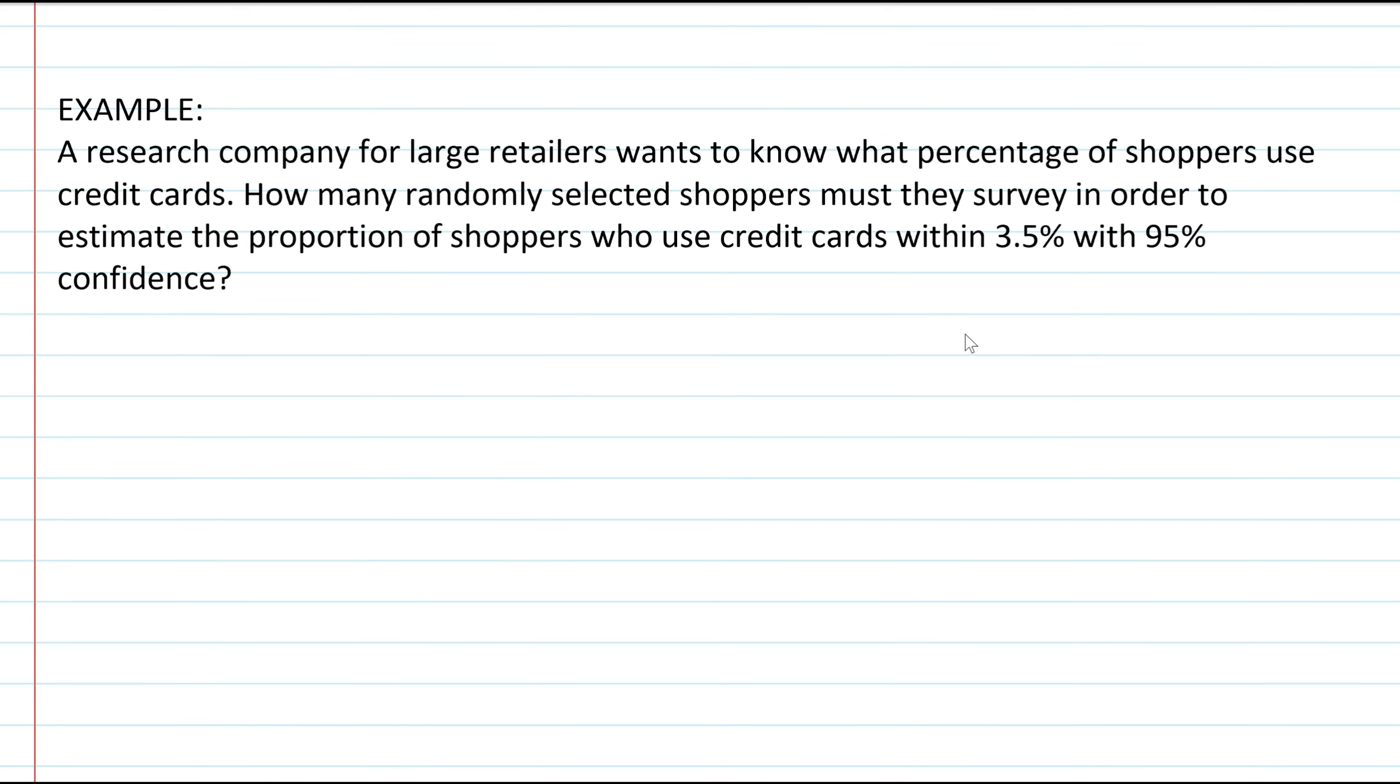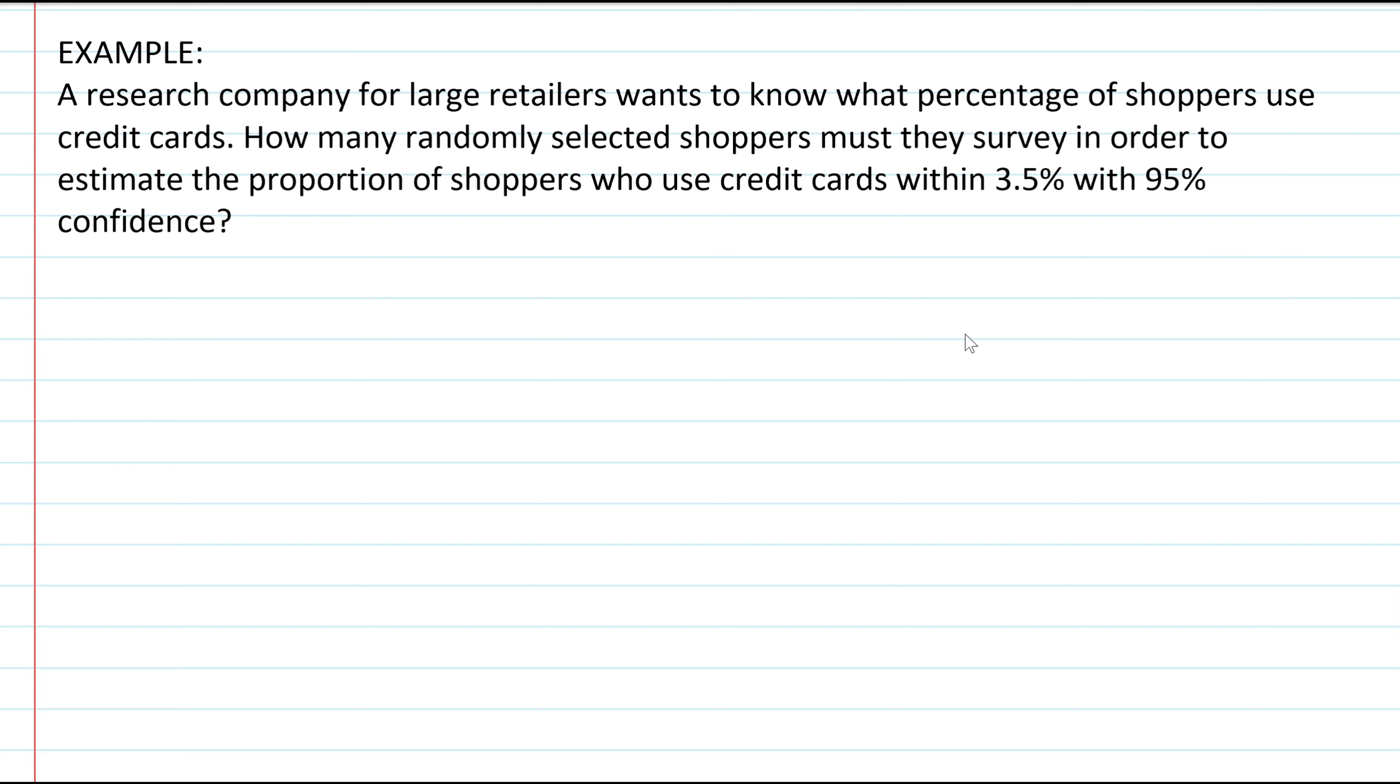So our last problem says that a research company for large retailers wants to know what percentage of shoppers use credit cards. So how many randomly selected shoppers must they survey in order to estimate the proportion of shoppers who use credit cards within 3.5 percent with 95 percent confidence? Well we already know the margin of error formula right: has the z-asterisk and this is multiplied times the square root of the product of p-hat and q-hat all divided by n. So what we're going to need to solve for is n because we're trying to find that value, how many randomly selected shoppers that they must survey.